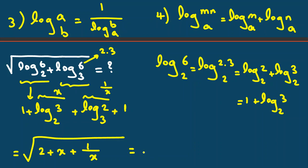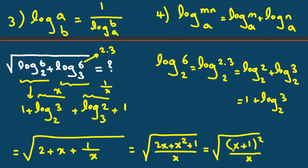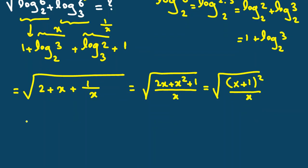If we use common denominator, it will be 2X plus X squared plus 1. And we can say it is X plus 1 squared over X.